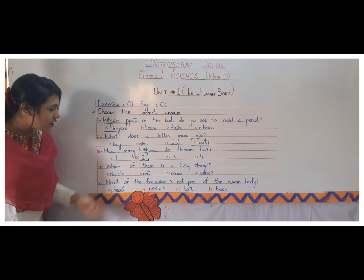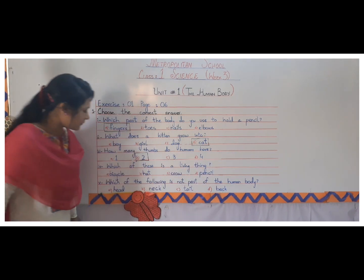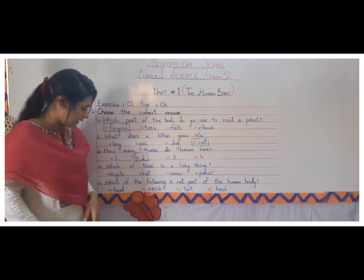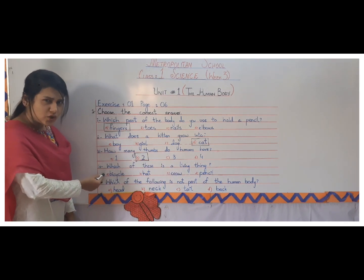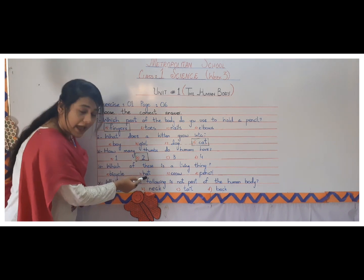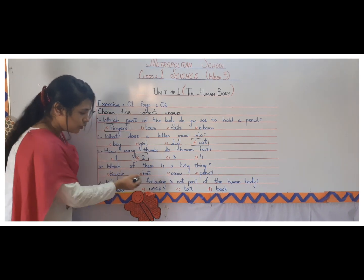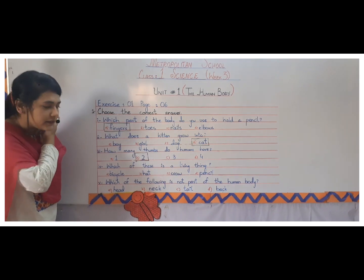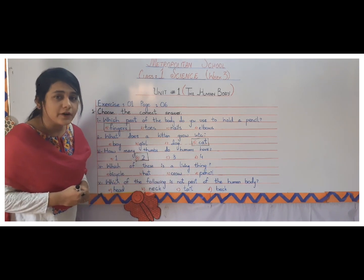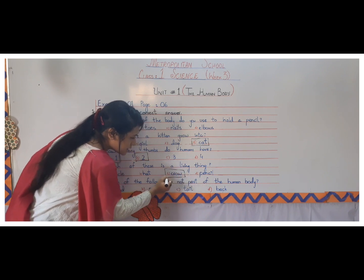Fourth one is: which of these is a living thing? A bicycle — is a bicycle a living thing? No, bicycle is not a living thing. Is a hat a living thing? No, a hat is not a living thing. Is a crow a living thing? What is a crow? It's a bird. So crow is a living thing.